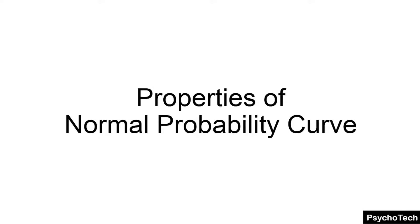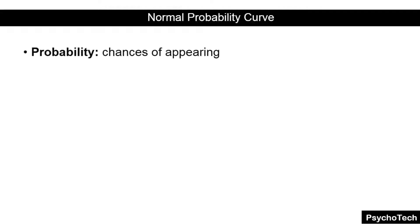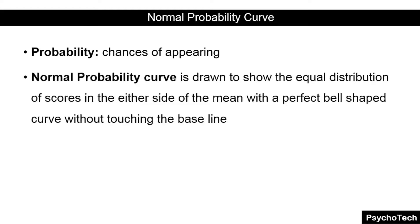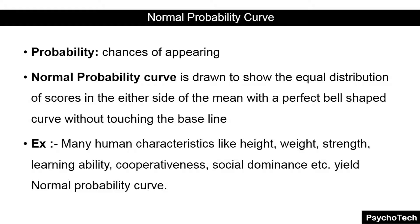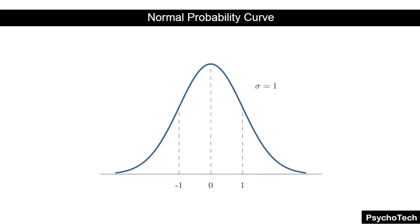In this video I am going to discuss the properties of normal probability curve. Probability means chances of appearing, and the normal probability curve is drawn to show the equal distribution of scores on either side of the mean with a perfect bell-shaped curve without touching the baseline. Many human characteristics like height, weight, strength, learning ability, and social dominance yield a normal probability curve.